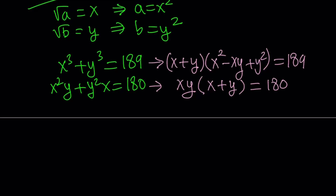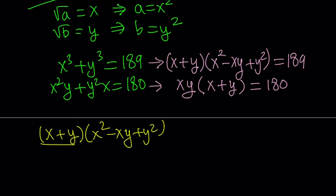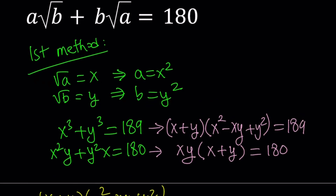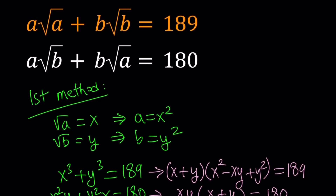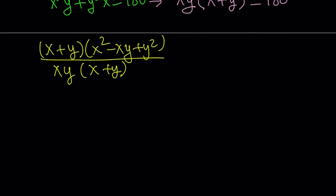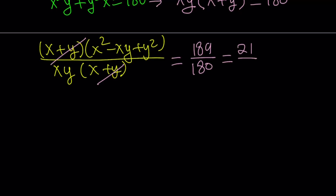There are a lot of things you can do from this, but I will divide the equations side by side. Notice that if x or y is 0, that implies a or b is 0 and this system won't work, so we can safely say they're different from 0 and cancel the x plus y terms out. This gives us 189 over 180. Both numbers are divisible by 9, so we simplify to 21 over 20.